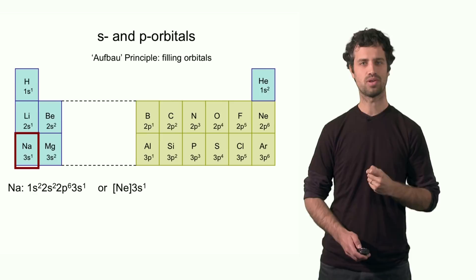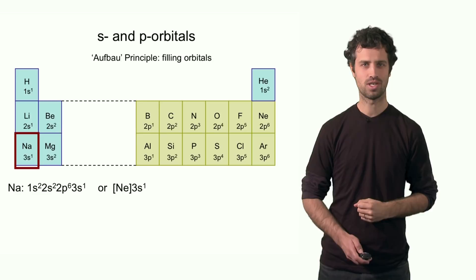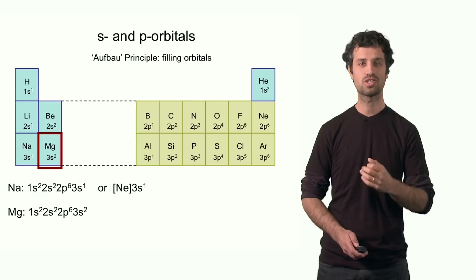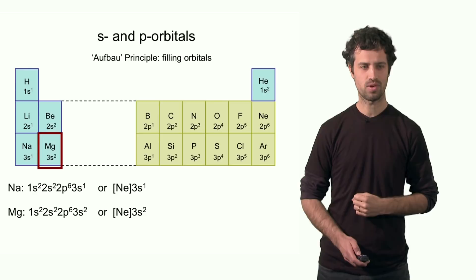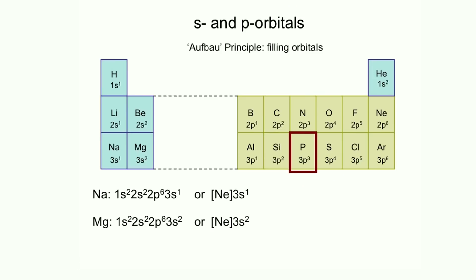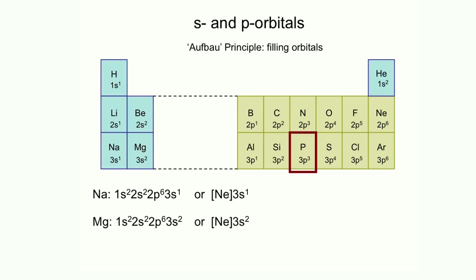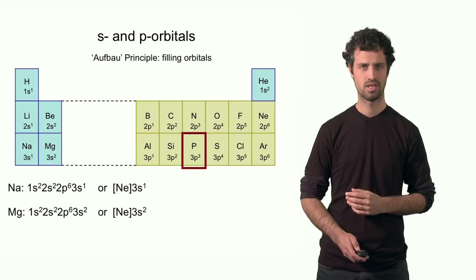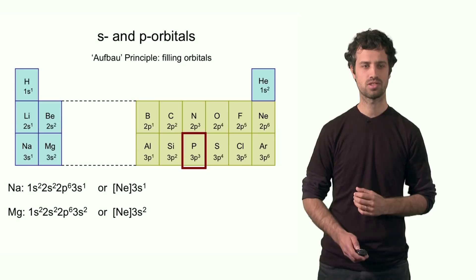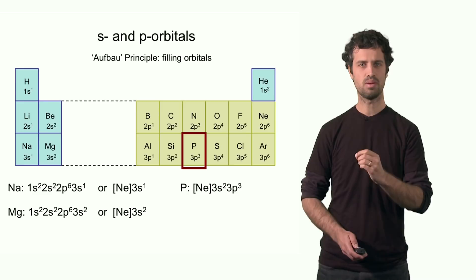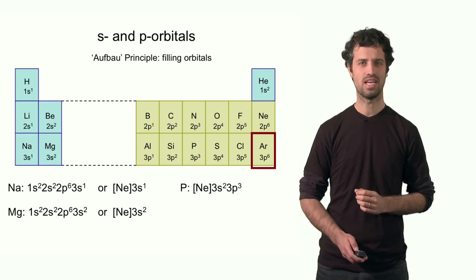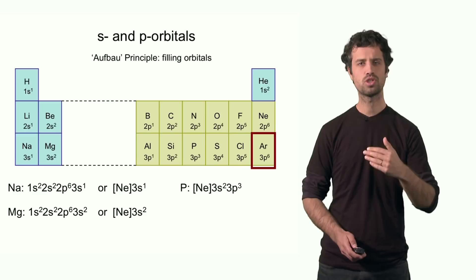Magnesium has one extra electron, so its electron configuration is [Ne] 3s². Moving further to phosphorus — the third element in the 3p subshell — it has 3 electrons in the 3p subshell, and its configuration can be written as [Ne] 3s² 3p³. Finally, argon — like neon — has a closed shell arrangement, with all orbitals in n = 3 occupied. Its electron configuration is [Ne] 3s² 3p⁶.